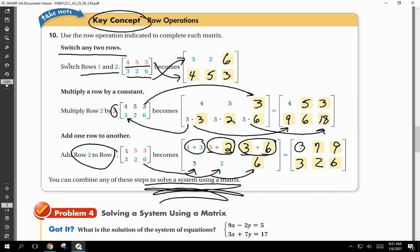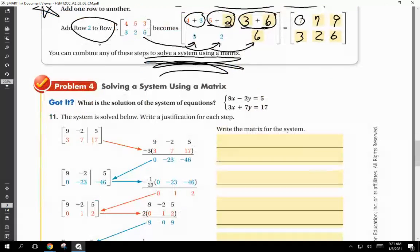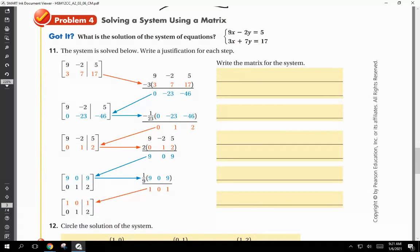You can combine any of these steps to solve a system using a matrix. You can use any of those steps to solve a matrix. This is why this is a key concept. You can switch any two rows. You can multiply a row by a constant, which we do all the time in two and three step variable ones. And you can add a row to another, which we also do. These are pretty similar to what we've learned before. A lot of times, if you think differently, these matrices are good if you learn differently. That's why everyone teaches them. Maybe your mind works differently. You're more of a hands-on person. You can see this a lot different. The system is solved below. Write a justification for each step. And this looks crazy, but it's not that bad.